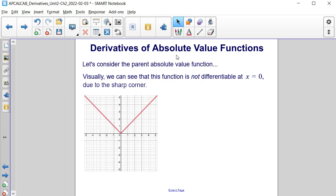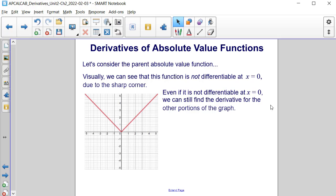Now let's consider absolute value functions and their derivatives. Let's consider the parent absolute value function. Visually, we can see that this function is not differentiable at x equals 0 due to the sharp corner. So even if it's not differentiable at x equals 0, we can still find the derivative for the other portions of the graph.